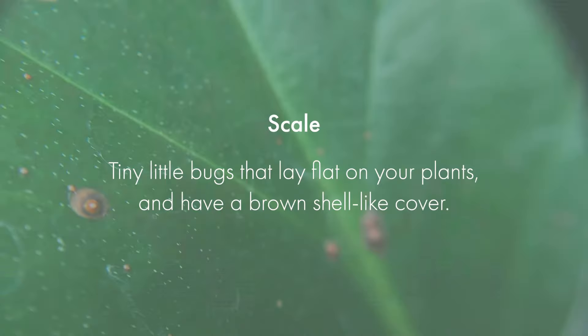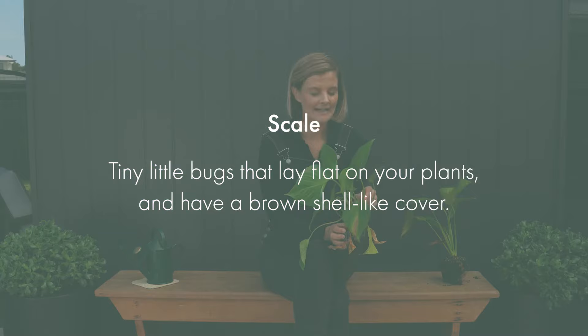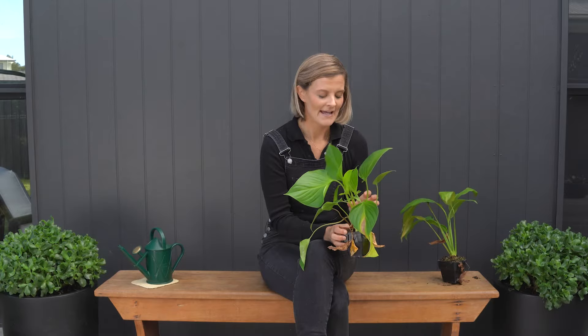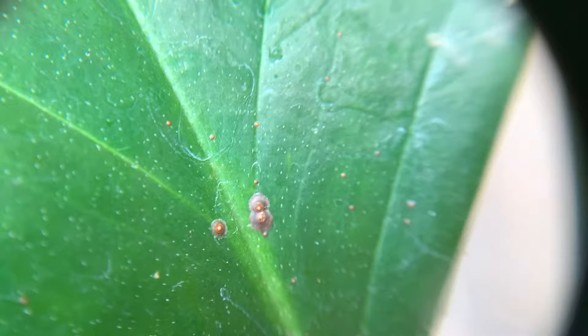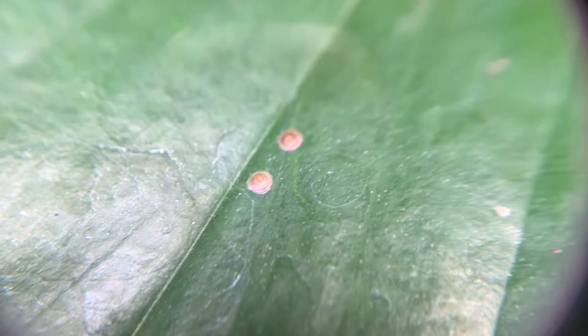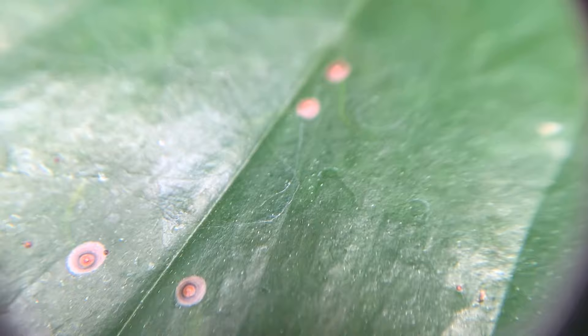Scale are tiny little bugs that lay flat on the stem of your plants and they have a brown shell-like covering over top. What they love to do is suck the sap out of your plants. Like many of the above critters, scale are immobile once they find their home — they lock themselves into place and begin feeding on the sap of your plant.